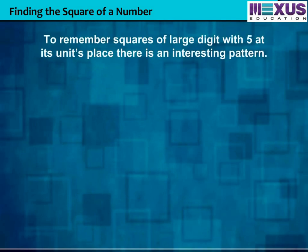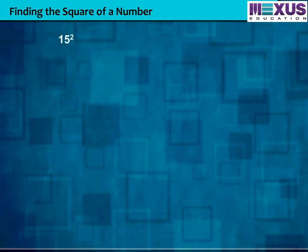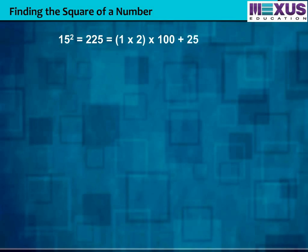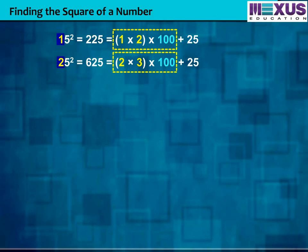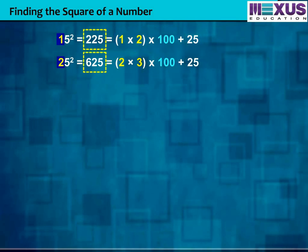To remember squares of large numbers with 5 at their unit place, there is an interesting pattern. Consider 15 square — it has 5 at its unit place and equals 225, which by expanding we get 1 into 2 into 100 plus 25. For 25 square, it is 2 into 3 into 100 plus 25. So for finding the square of a number with units place as 5, just multiply the other digits with their consecutive number and 100, then add 25 to it to get the square number.